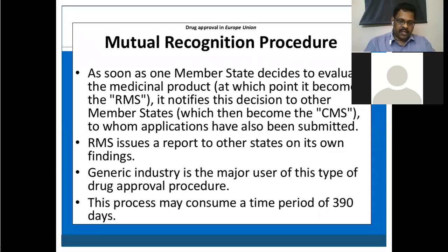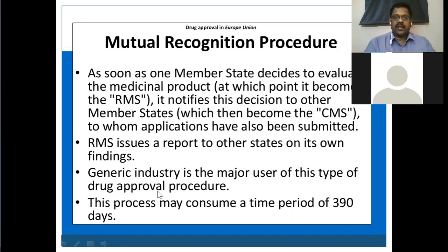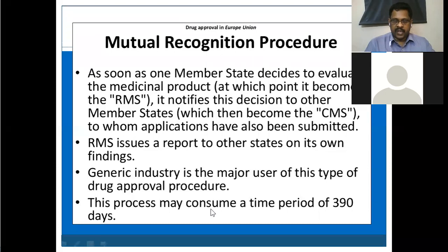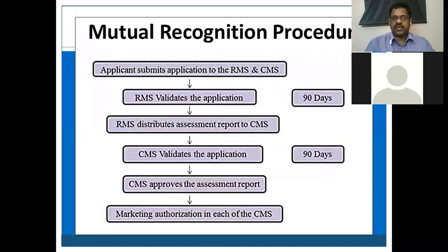The other countries will accept the data and simultaneously also give marketing approval — those countries are called Concerned Member States, CMS. The RMS issues a report to the other states based on its own findings. The generic industry is the major user of this type of drug approval procedure. The overall time period for this approval process is 390 days.